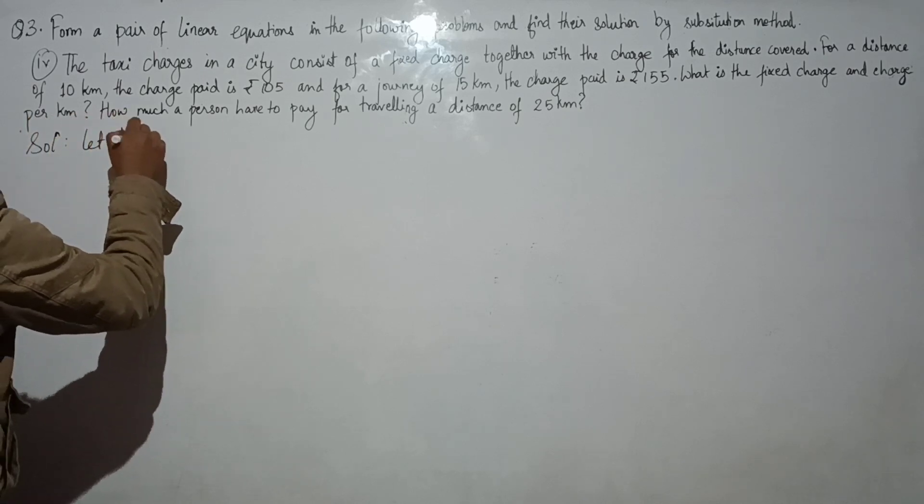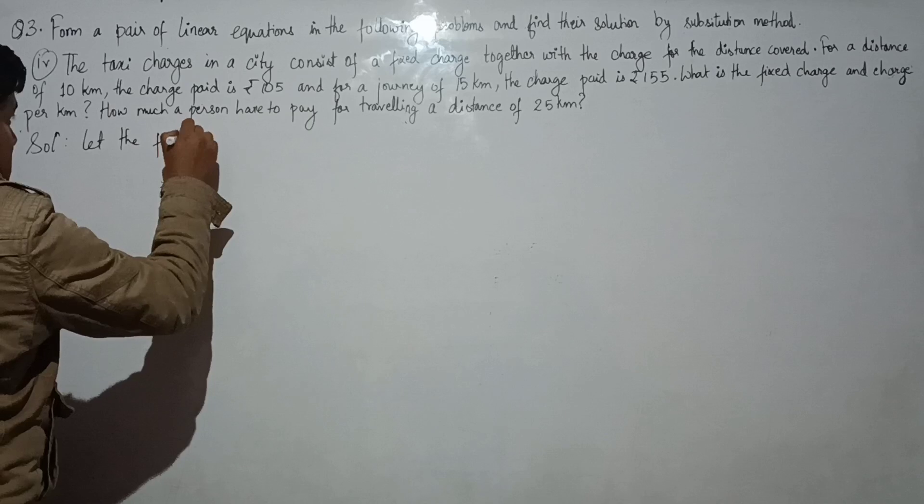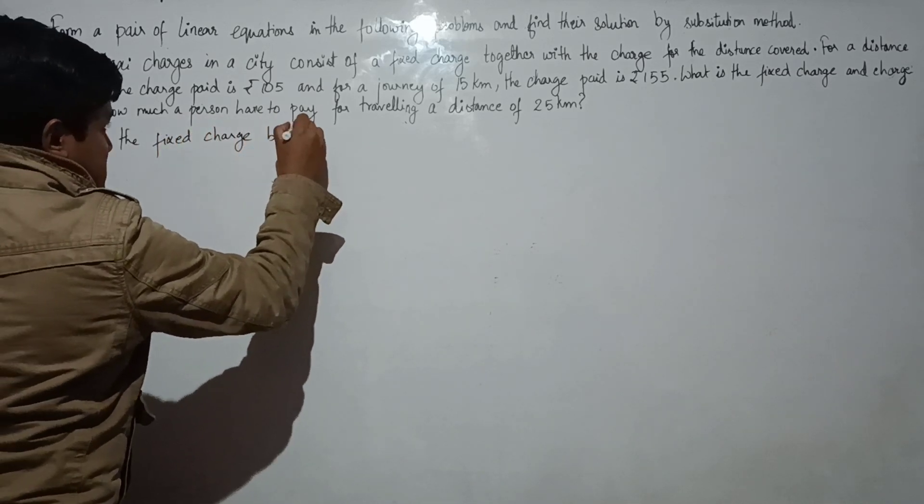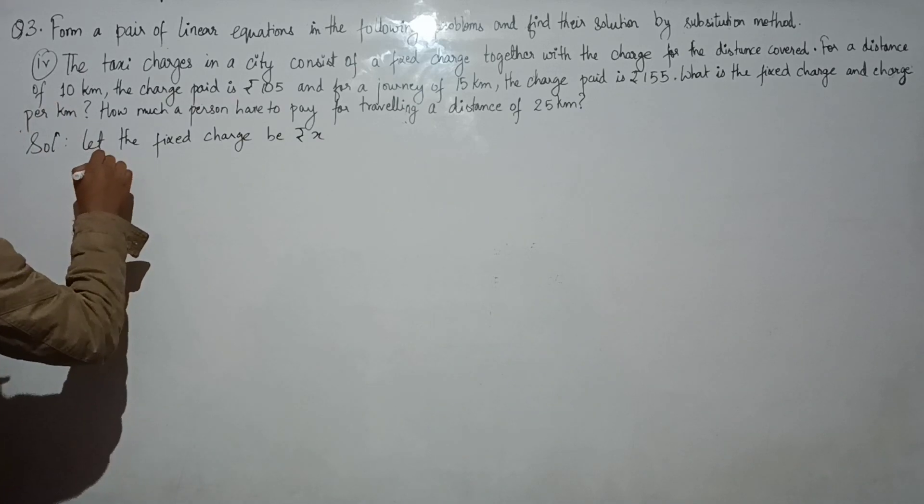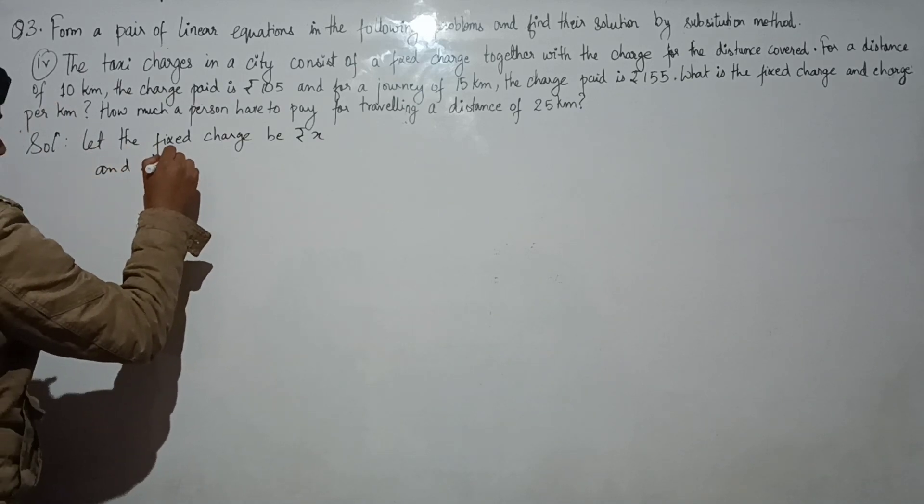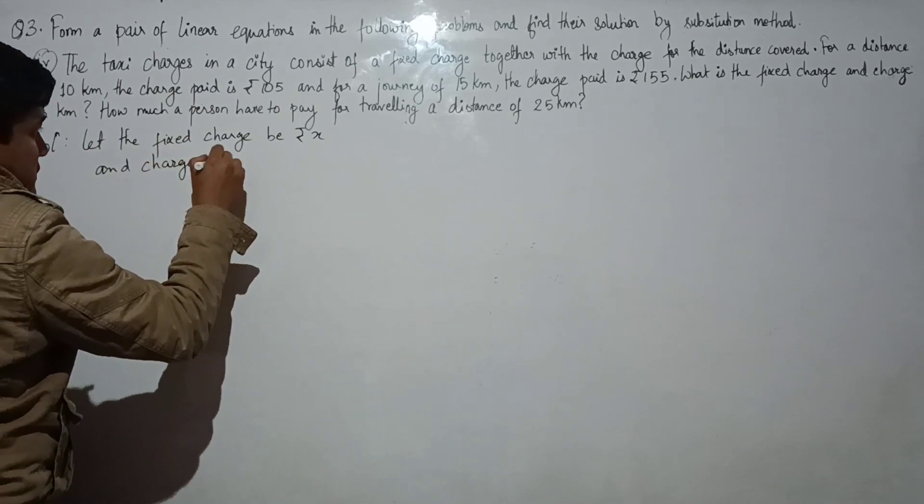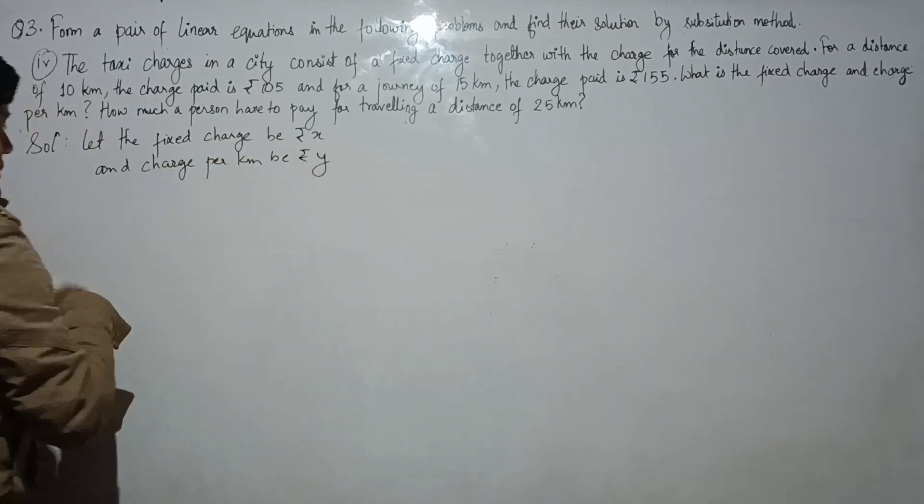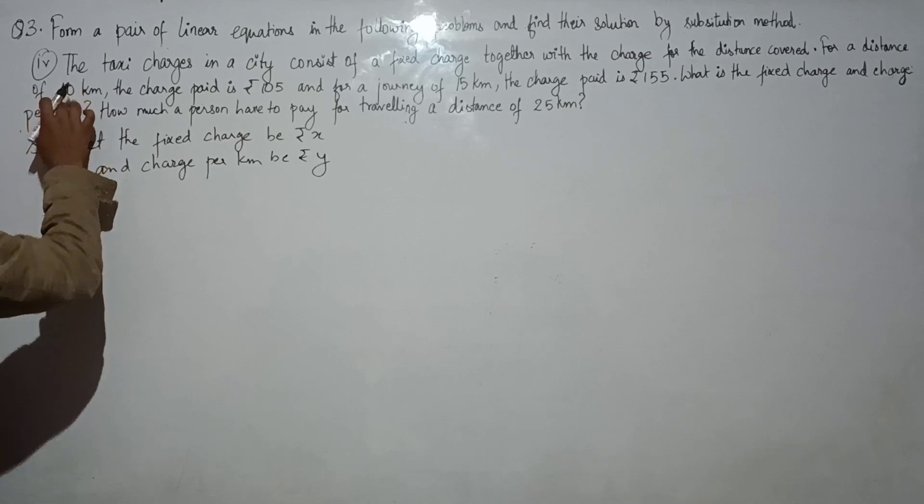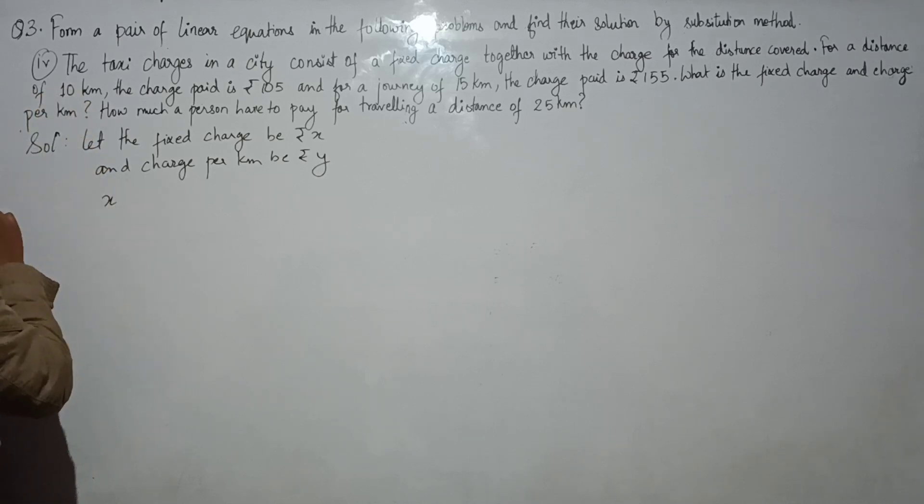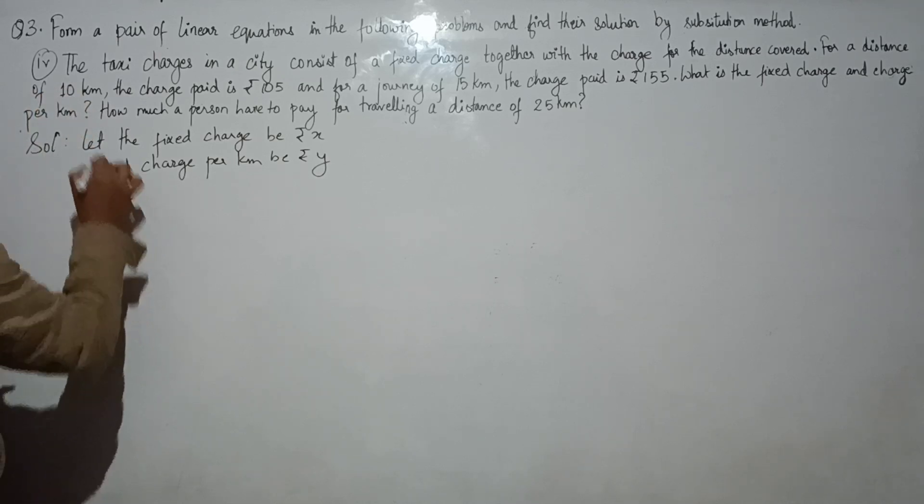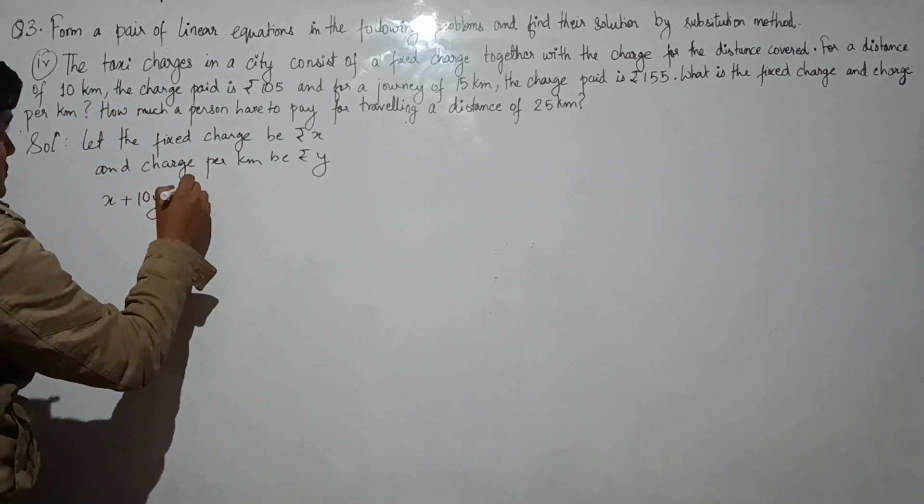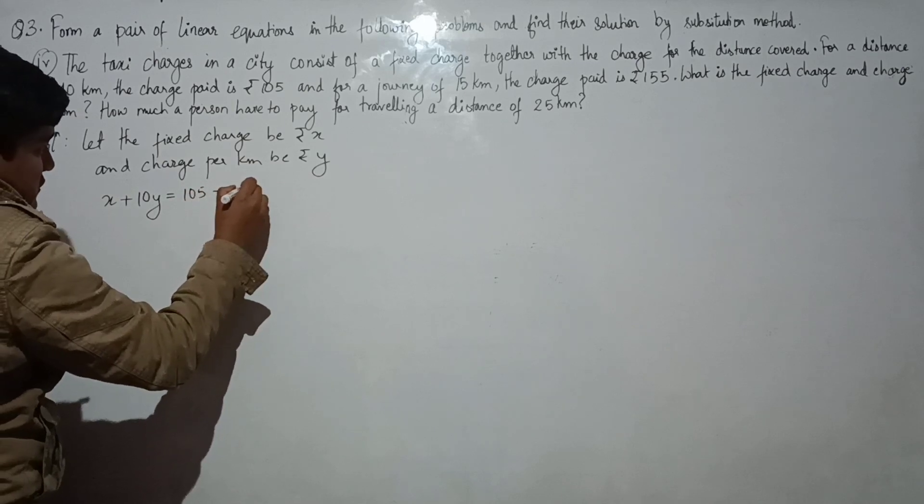Let the fixed charge be Rs. x and charge per km be Rs. y. Then if a person travels 10 km, he has to pay the fixed charge plus 10 into y equals to 105. So equation 1.